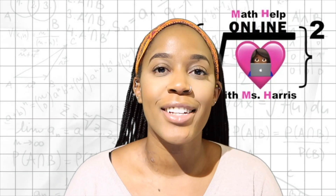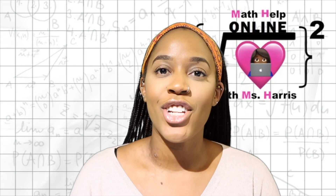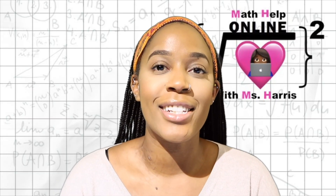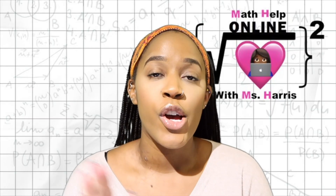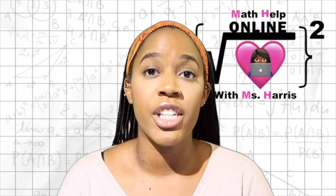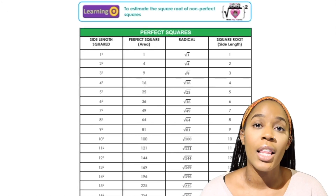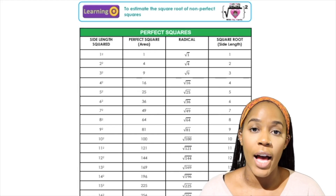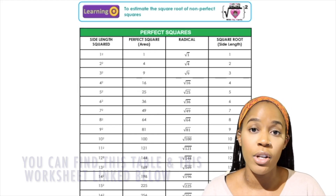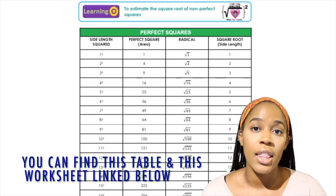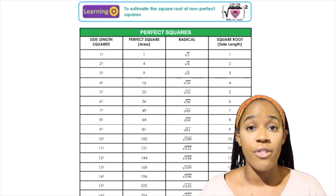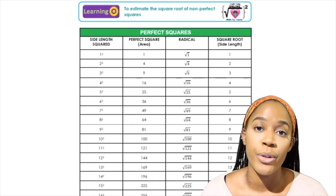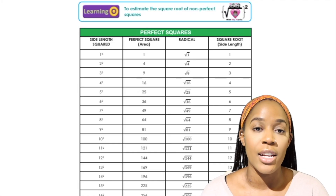Hey everyone, welcome back to my channel, or welcome if you're new. This is Miss Harris, and in today's lesson we're going to be estimating non-perfect squares. In the last lesson we all had to complete a perfect squares table that gave us the side length, what that looks like under the radical, what it looks like when you're writing it as if you're going to take the square root, and what the actual square root of the number is.